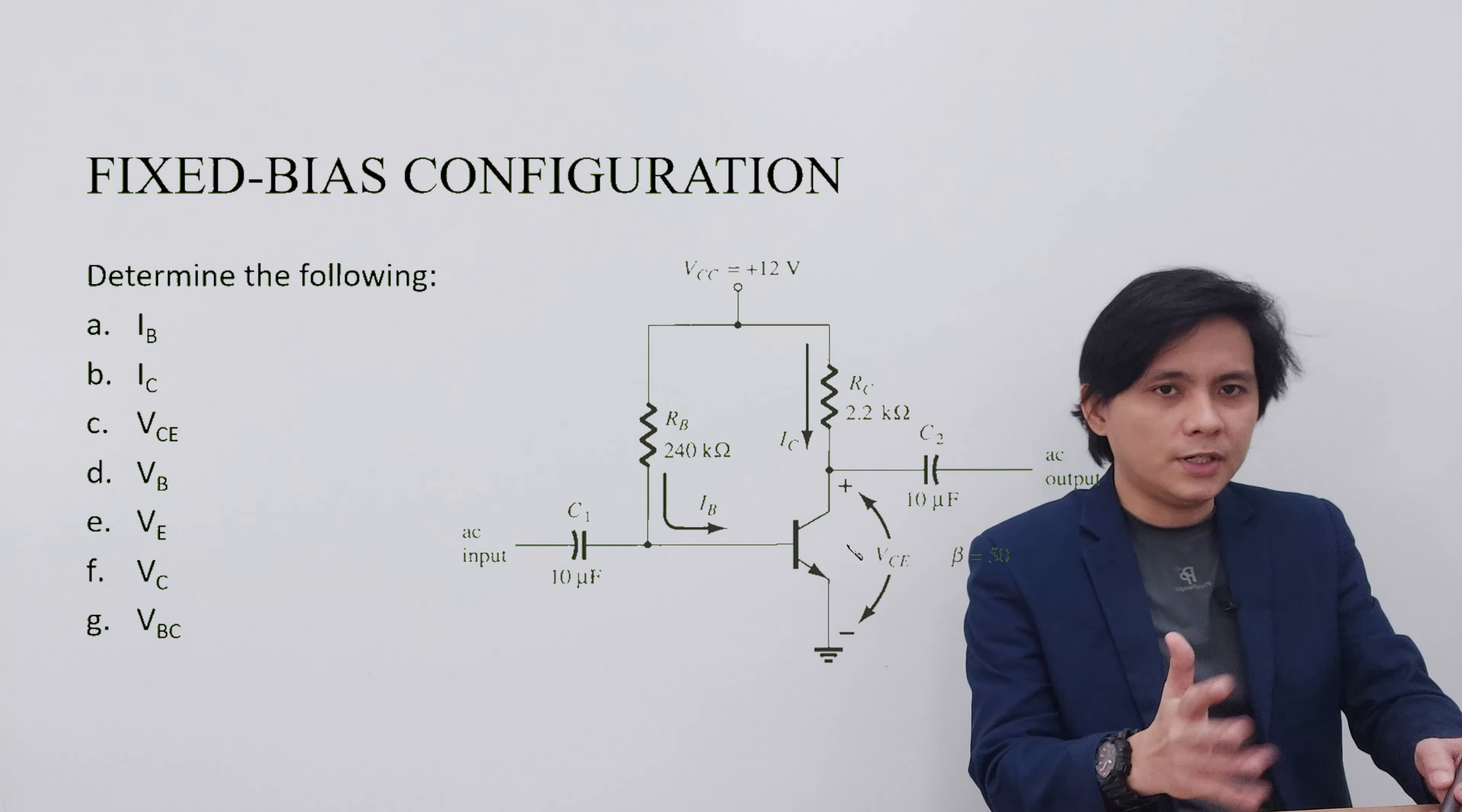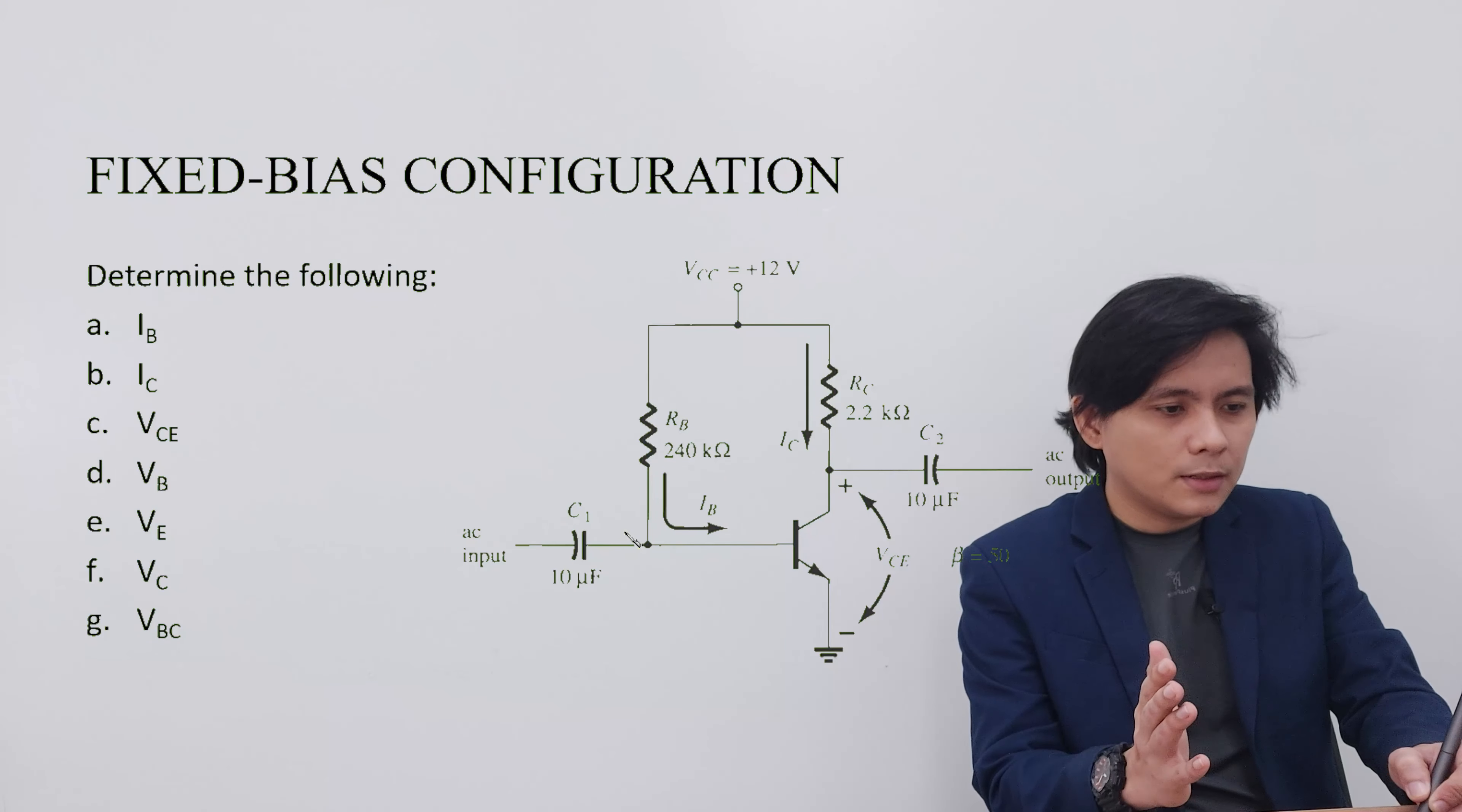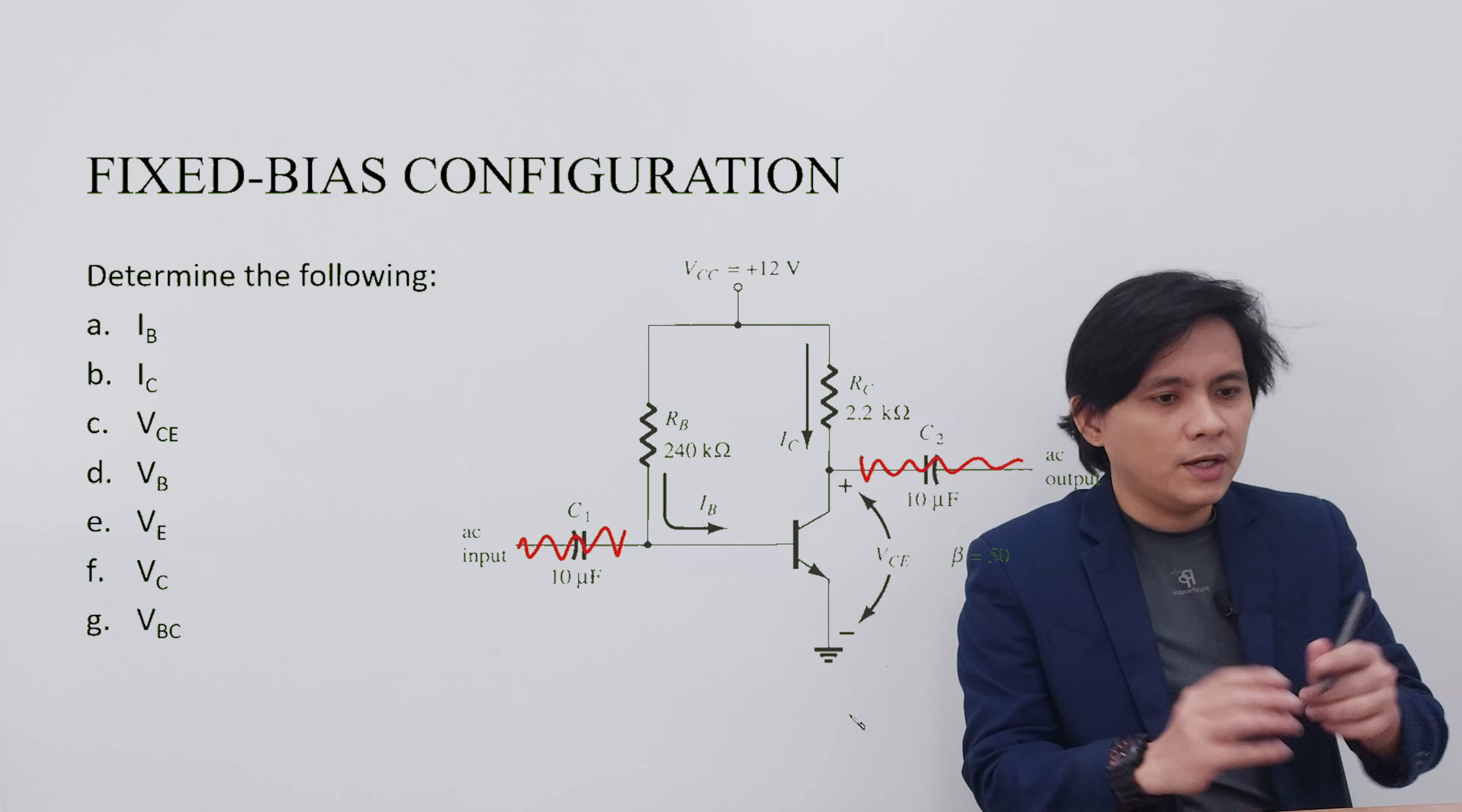So let's start solving this one by equating the value of the capacitor into infinity. Let's just consider disregarding the AC part on the input and output side. So let's just focus on the DC part of the circuit.